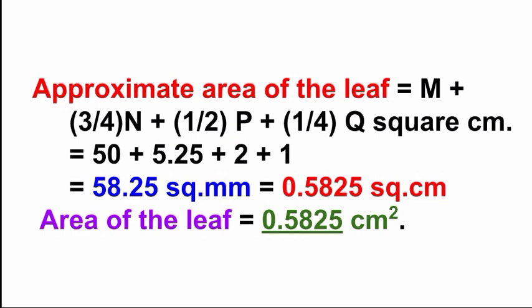Approximate area of the leaf = M + (3/4)N + (1/2)P + (1/4)Q square centimeters. Substituting: 50 + (3/4 × 7) + (1/2 × 4) + (1/4 × 4) = 50 + 5.25 + 2 + 1 = 58.25 square centimeters.